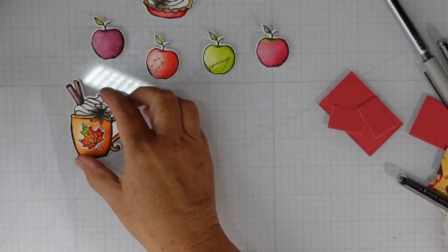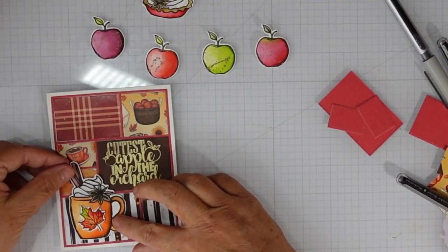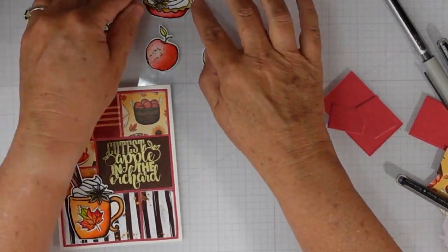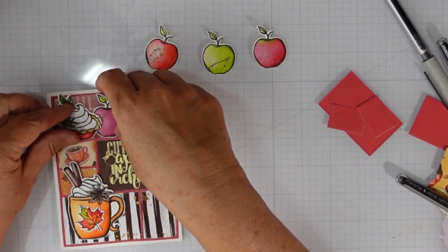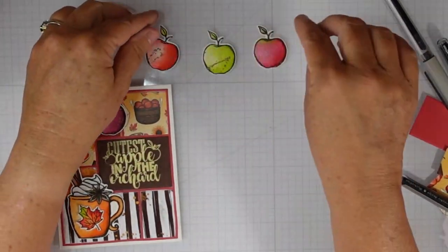I'm going to start laying this out and I'm going to pop up some of the pieces using some foam tape. So I like to add foam tape to add different layers and different dimensions.